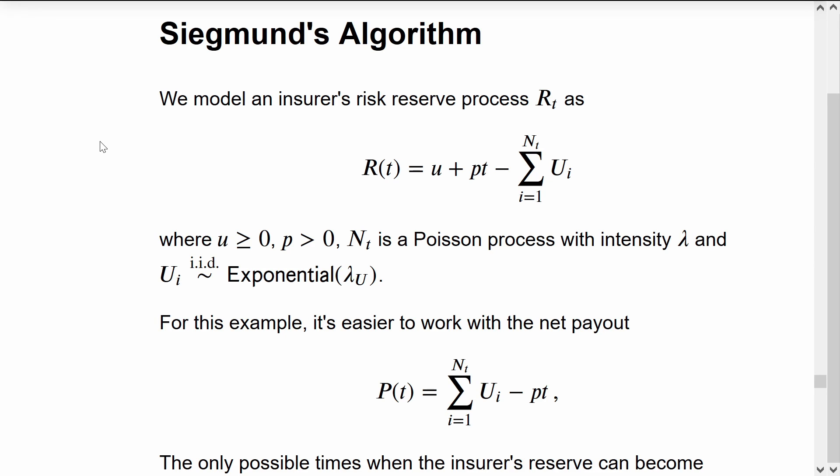Now I want to give quite a long example which will relate importance sampling with exponential tilting, with actuarial science, and large deviation results.